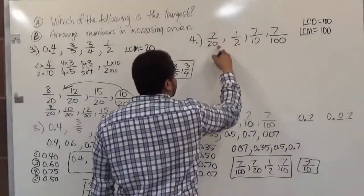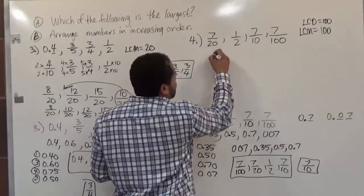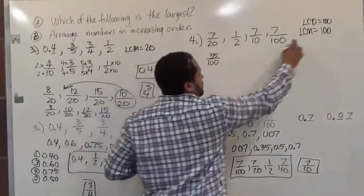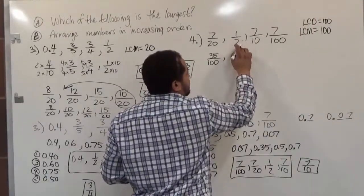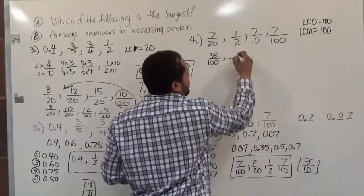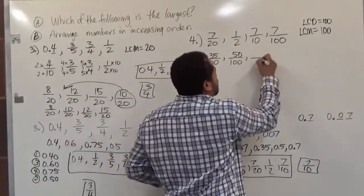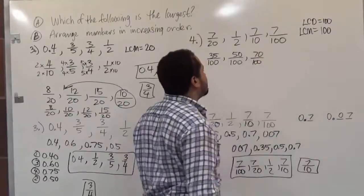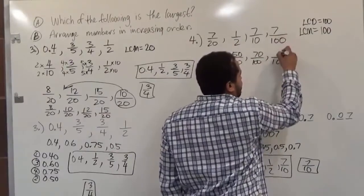Here we're going to multiply the 7 over 20 by 5 and 5 on top and bottom. So 5 times 7, 35, and 5 times 20 is 100. There's our LCD. We're going to do this for each one of them. So 50 times 1 and 50 times 2 gives us 100. So 50 times 2, 50 times 1. Then 10 times 10 gives us 100. So 10 times 10 and then 10 times 7 is 70. And 100 times 1 gives us 100. So 1 times 7 is just 7.